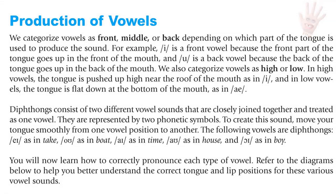Production of vowels. We categorize vowels as front, middle, or back, depending on which part of the tongue is used to produce the sound. For example, E is a front vowel because the front part of the tongue goes up in the front of the mouth, and U is a back vowel because the back part of the tongue goes up in the back part of the mouth. We also categorize vowels as high or low. In high vowels, the tongue is pushed up near the roof of the mouth, as in E; in low vowels, the tongue is flat at the bottom, as in A. Diphthongs consist of two different vowel sounds closely joined and treated as one vowel. To create these sounds, move your tongue smoothly from one vowel position to another. The diphthongs are: A as in take, O as in boat, I as in time, OW as in house, and OI as in boy.